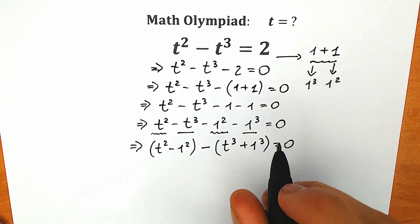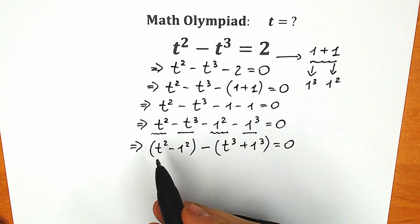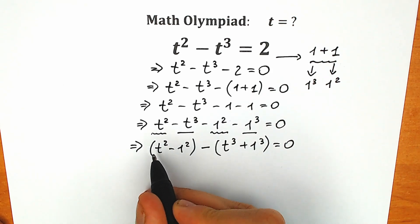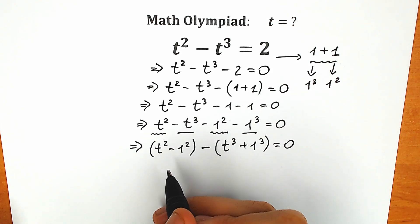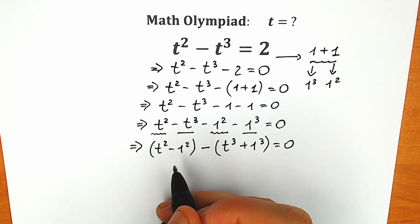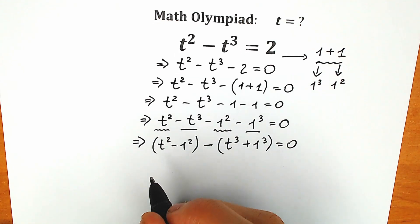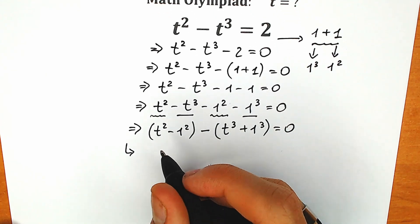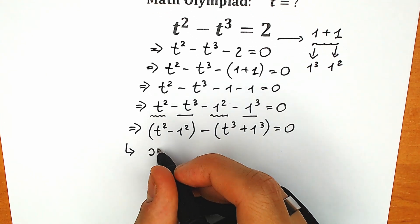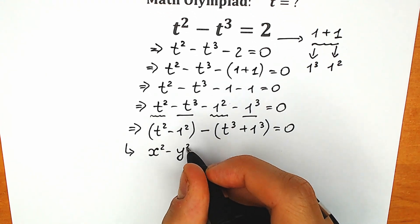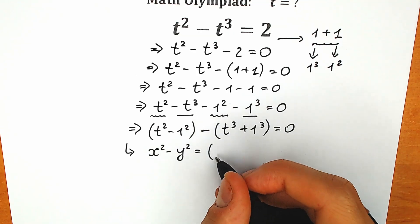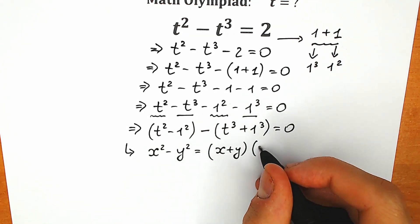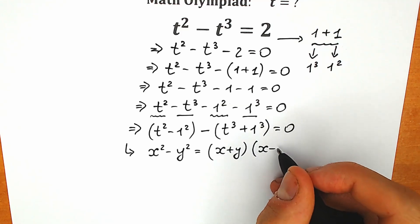Let's look at this from a different angle — we have two parentheses. The first one, t squared minus 1 squared, is the difference of squares formula. We can easily remember: x squared minus y squared equals x plus y times x minus y. Everyone knows this formula.